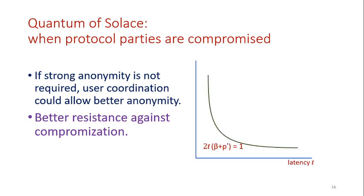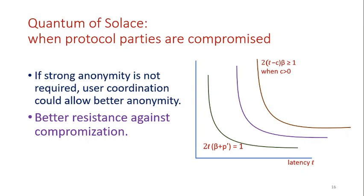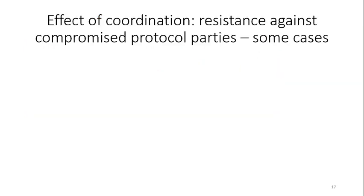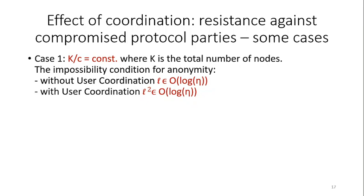Let's explain that with a graph. This is the graph for the universal necessary constraint. Then this is the curve for when there are no compromised nodes, but without user coordination. The necessary constraint becomes much easier for protocols with user coordination. For a specific example, when a constant fraction of protocol nodes are compromised, without user coordination strong anonymity is impossible if latency is in the order of log(eta). However, with user coordination, strong anonymity is impossible only if L squared is in the order of log(eta), which gives more scope for protocols with user coordination to achieve strong anonymity.